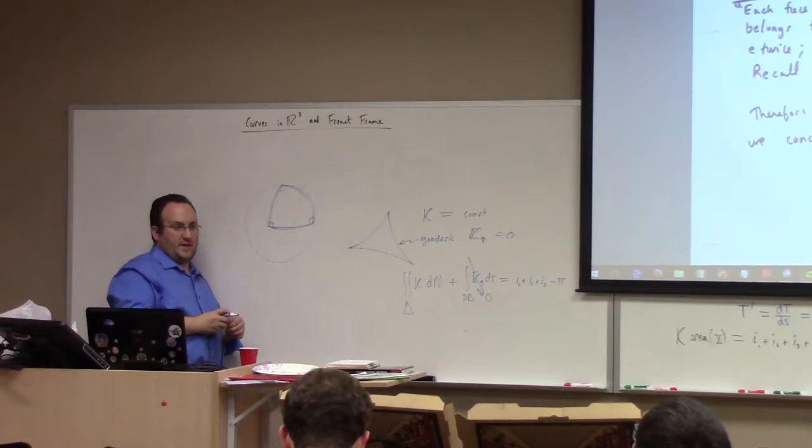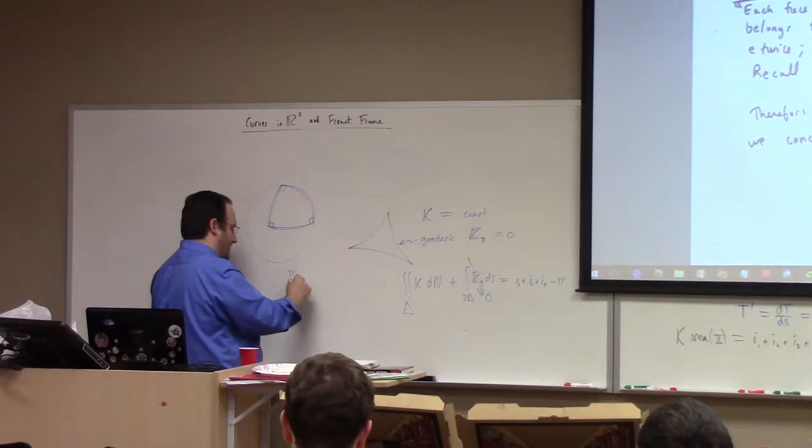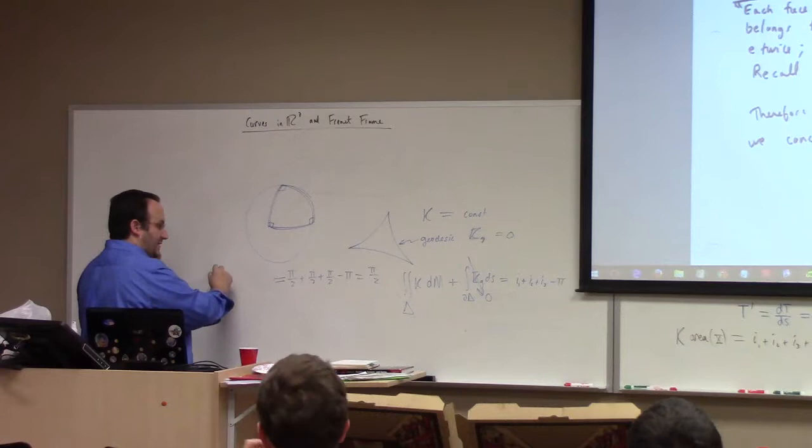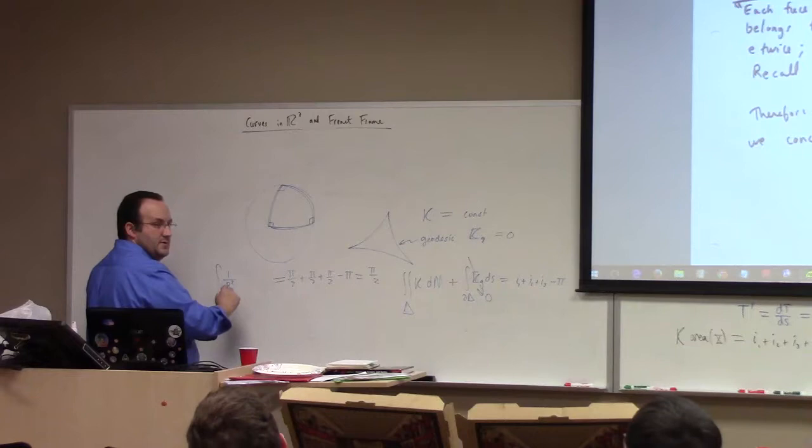You get pi/2 plus pi/2 plus pi/2 = 3pi/2. So 3pi/2 minus pi equals pi/2, which is supposed to be the integral of the curvature — which is 1 over r squared — times the volume form.